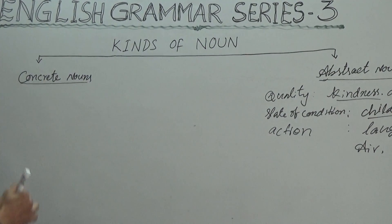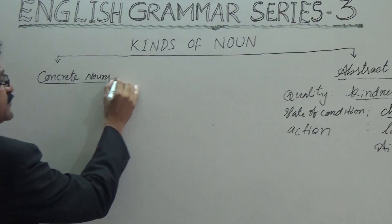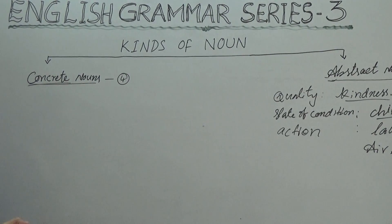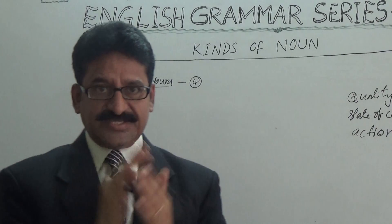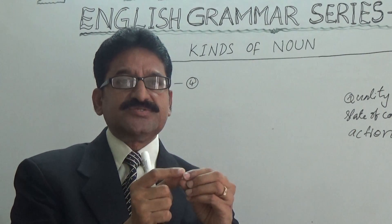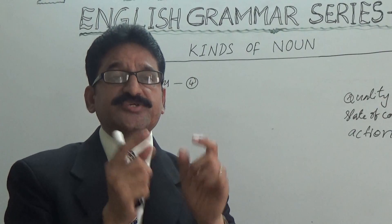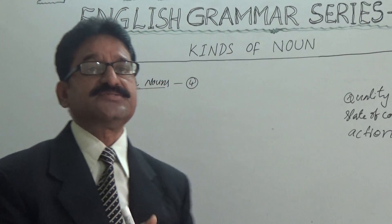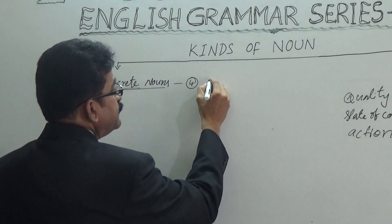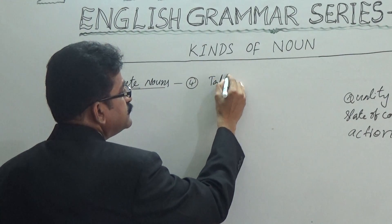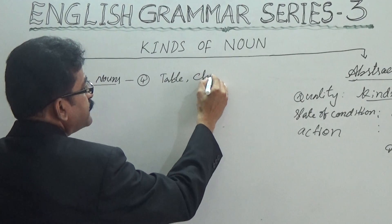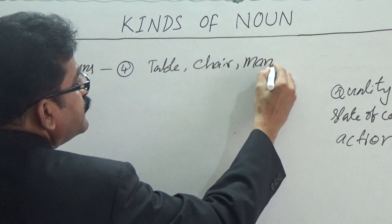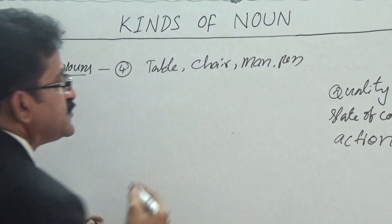Concrete nouns are four in number. Concrete in the sense — physically existing. The nouns, the things, objects, or whatever it is, which have physical features, are called concrete nouns. For example: table, chair, man, pen.